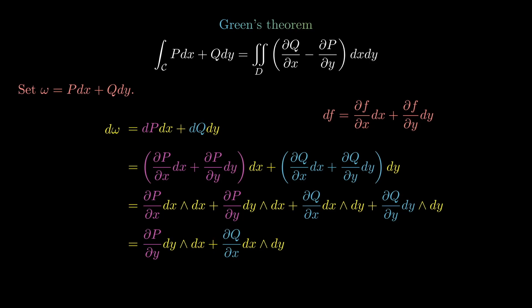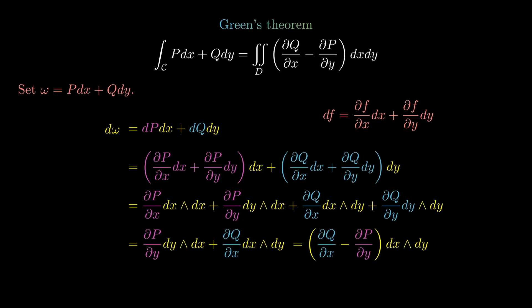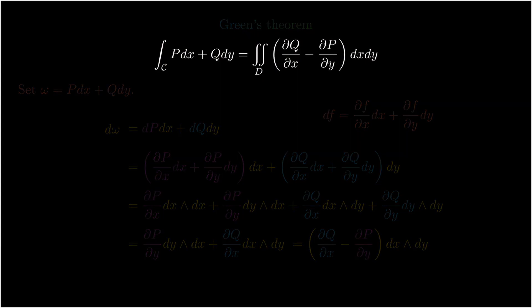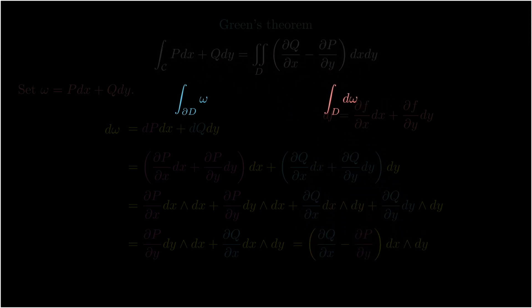Using anti-symmetry, dy ∧ dx = −dx ∧ dy, so dω = −(∂P/∂y)(dx ∧ dy) + (∂Q/∂x)(dx ∧ dy) = (∂Q/∂x − ∂P/∂y)(dx ∧ dy). Comparing with Green's theorem: the left-hand side is the integral over ∂D of ω, and the right-hand side is the integral over D of dω. Green's theorem simply says: the integral over the boundary of ω equals the integral over the entire region of dω.